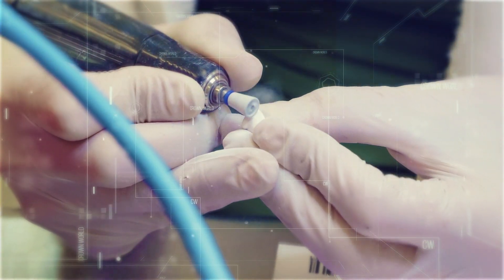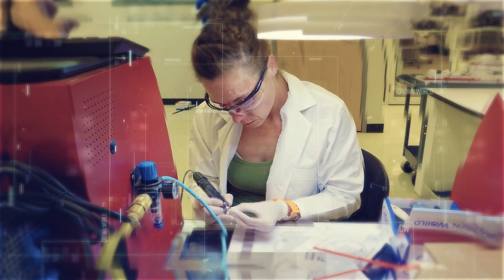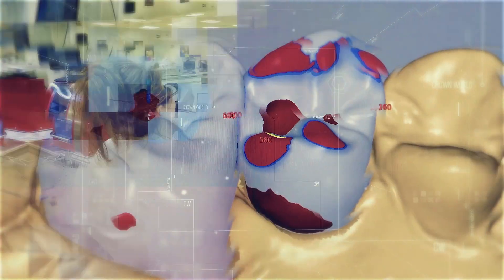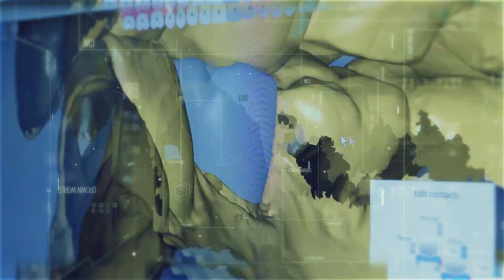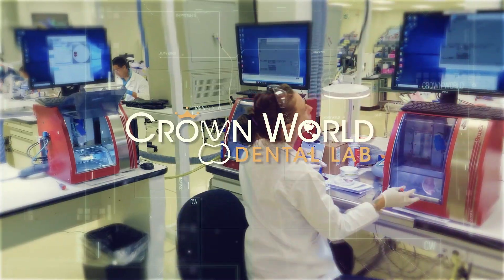Crown World is headed to being the fastest prosthetic lab in the United States and we do that by incorporating technology through CT scan, thus making everything more efficient in our processes to make that happen.